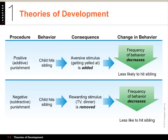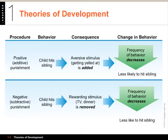On the punishment side, positive or additive punishment: a child hits their sibling, they get yelled at — something added that wasn't there — and the frequency of that behavior decreases. Negative or subtractive punishment: something the kid likes, like watching TV, is taken away as a result of obnoxious behavior, also making the child less likely to hit their sibling. That's the basic idea of operant conditioning.